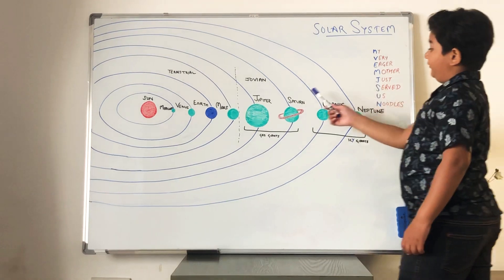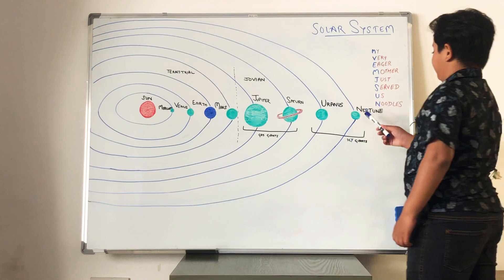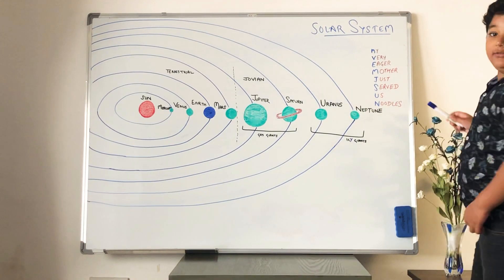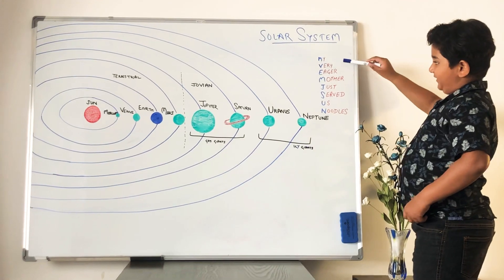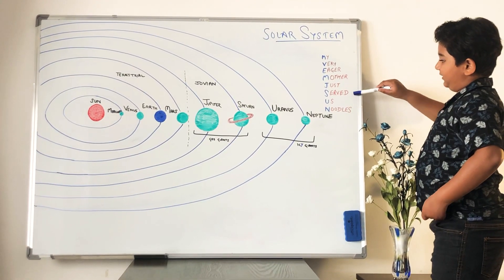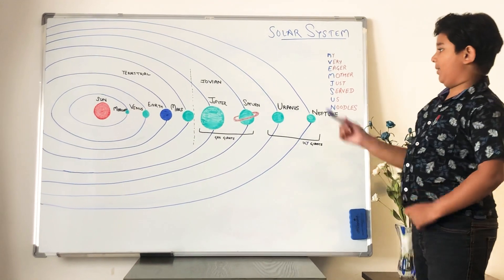J for Jupiter, S for Saturn, U for Uranus and N for Neptune. So, this is a very simple trick like my very eager mother just served us noodles. That's a very easy trick to remember all these planets.